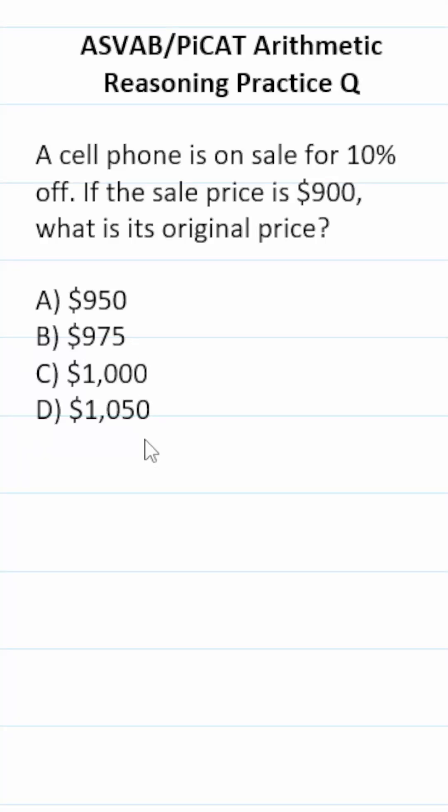So the way you want to think about this one is like this. $900 is equal to—again, there was a 10% discount—so it's going to be equal to 90% or 0.9 as a decimal of, and 'of' in math is multiply,